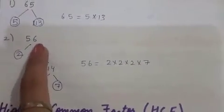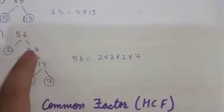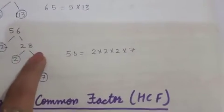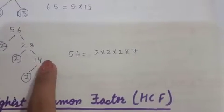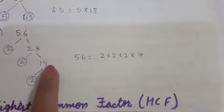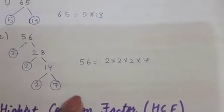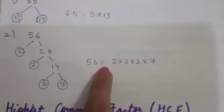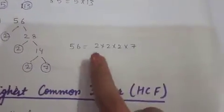Similarly for 56, it starts with 2 and 28. 28 is not prime. 28 again prime factorizes to 2 and 14. 14 is also not prime. Then 14 prime factorizes to 2 and 7. Both 2 and 7 are prime, so we stop. The prime factors of 56 are 2, 2, 2, and 7.